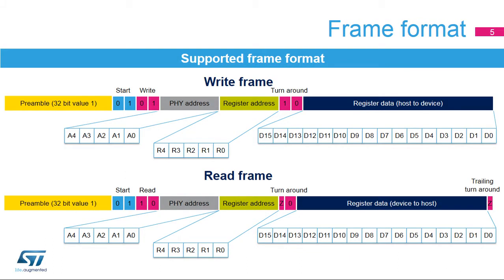The MDIO frame format is sent over the MDIO pin with an active MDC clock. The clock may be stopped outside the frame format. The host sends MDIO data on the falling edge of the MDC clock signal. A preamble consisting of 32 bits with MDO high is clocked in prior to the frame start. The frame start is encoded as a 2-bit value, 0-1. The frame operation is selected by a 2-bit field: 0-1 for a register write and 1-0 for a register read.